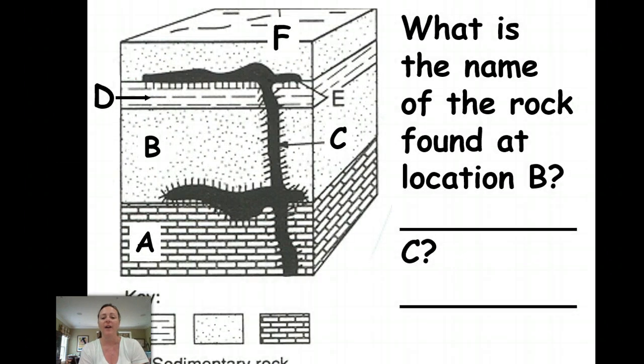What is the name of the rock found at location B and location C? Now we know this because we have to use our reference table. So I'm going to ask you to hit pause, go get your reference table, and look at the sedimentary rock chart to find the identification of rock B.